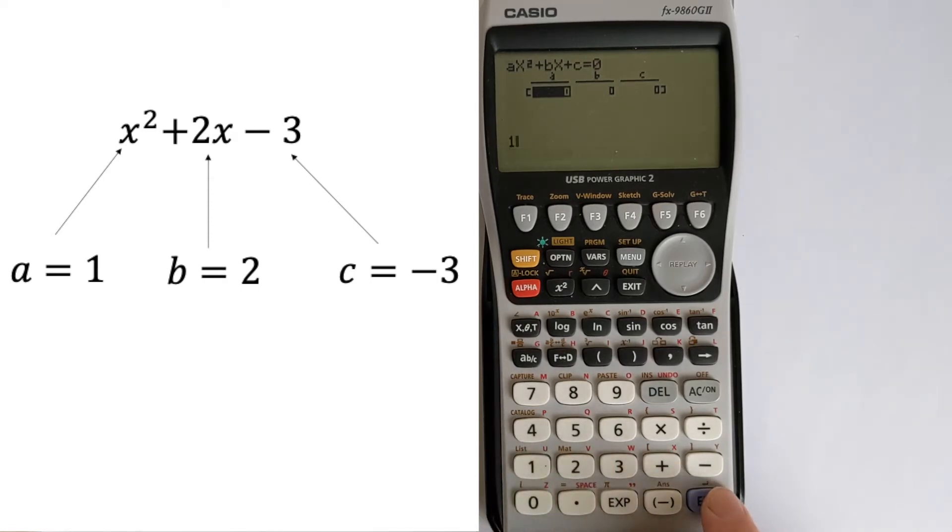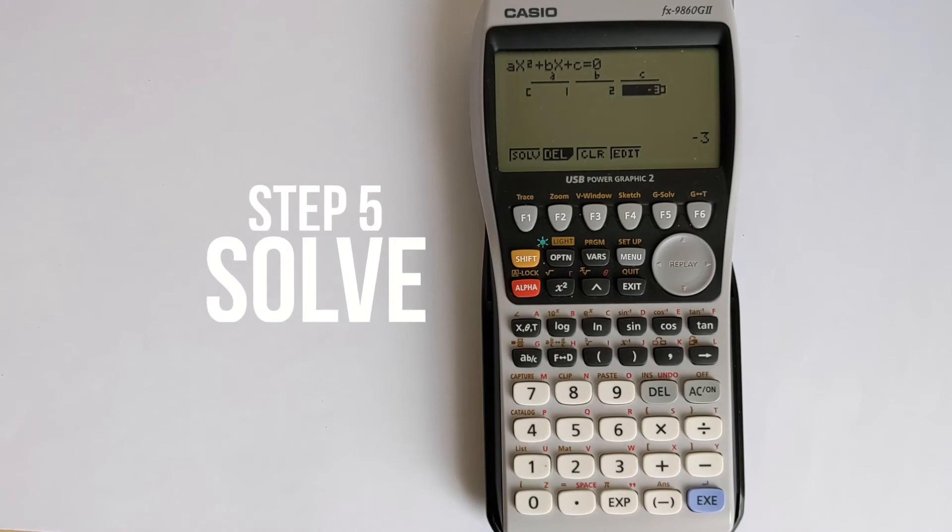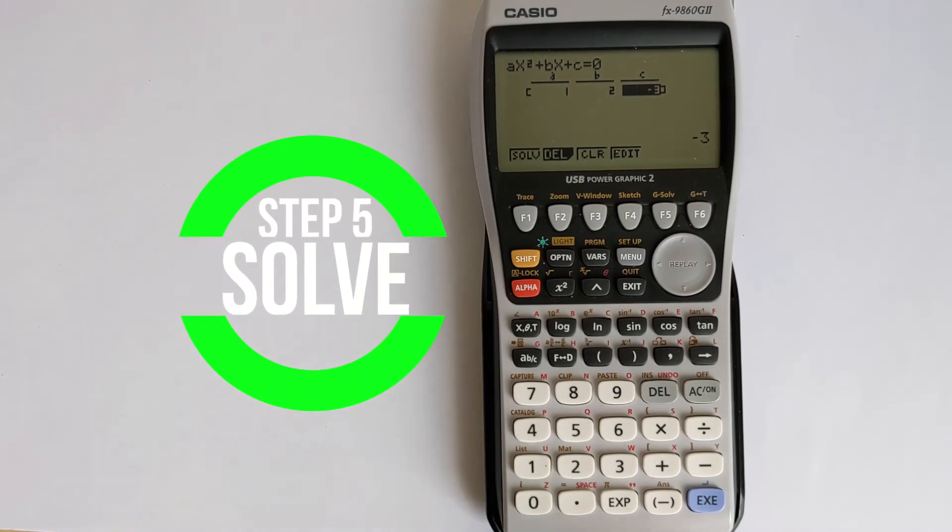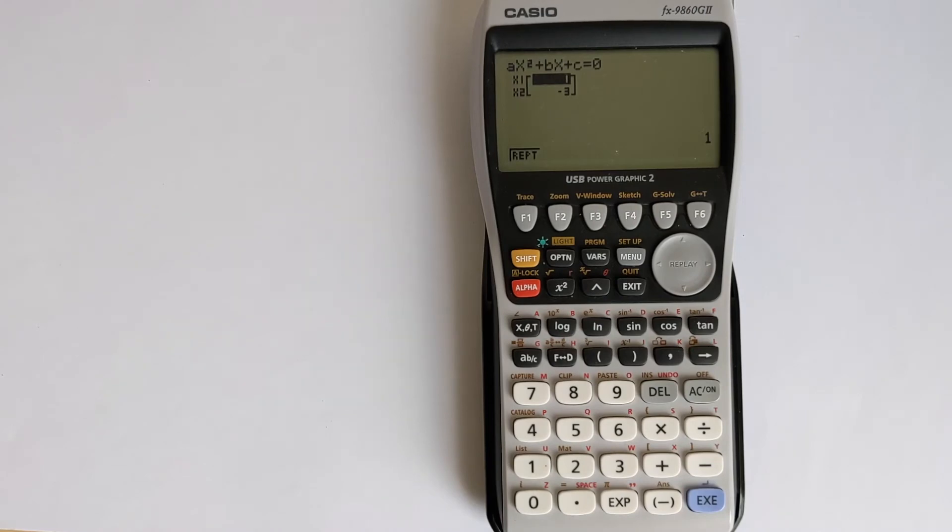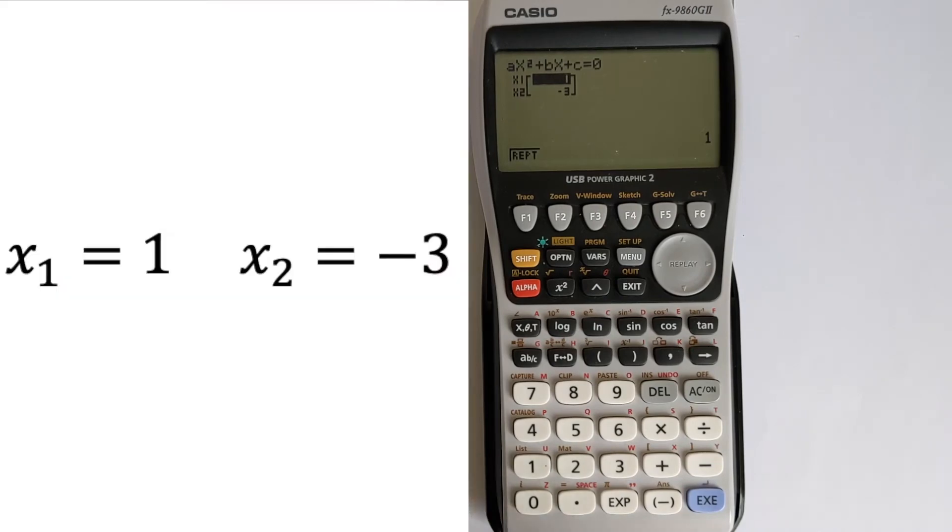So we're going to put in 1. Then we're going to put in 2 for B. And then C is going to be -3. And I'm pressing execute each time. And now we want to solve this. And if we want to solve it, you can simply just press the execute button again. And it will give you a vector of your solution. So the solutions are coming out as x1 is 1, and then x2 is -3.